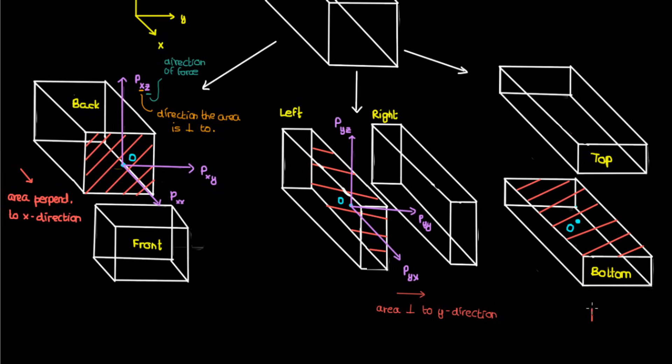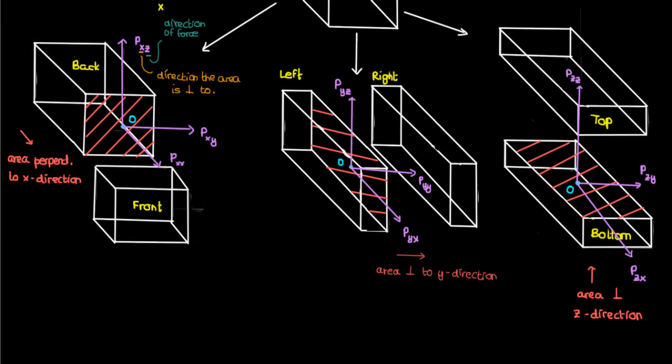And the third cross section, which is perpendicular to the z direction, is similar. Point O experiences a force per unit area that can be broken down into the components pzx, pzy, and pzz. We can actually combine all these force per unit area components into a 3x3 matrix as follows.